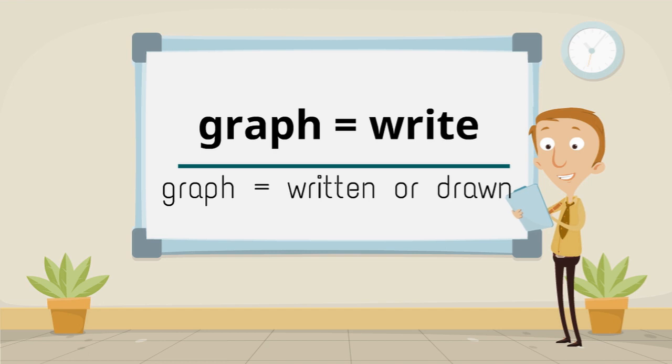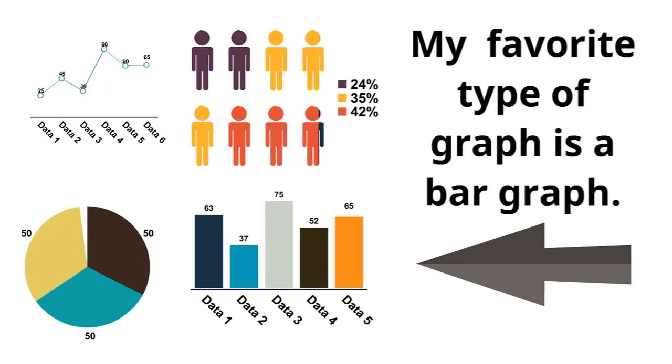Graph, meaning write, means graph — written down or drawn. My favorite type of graph is a bar graph.